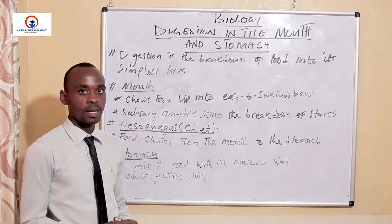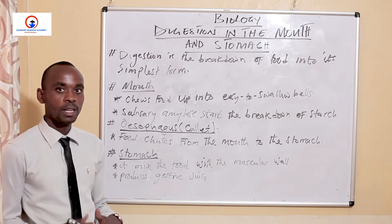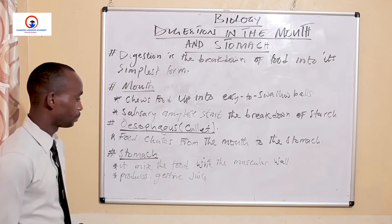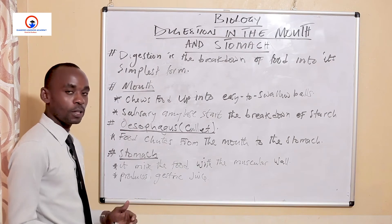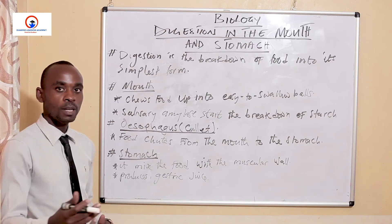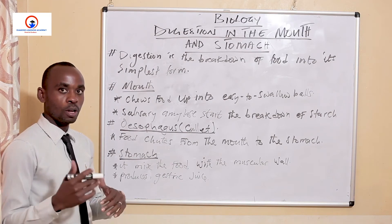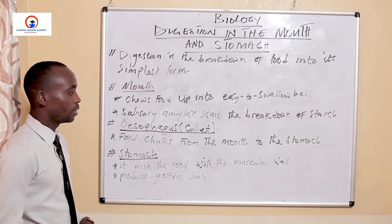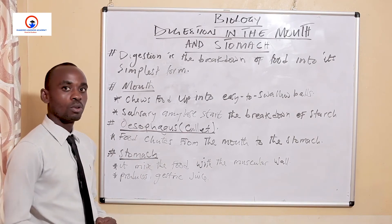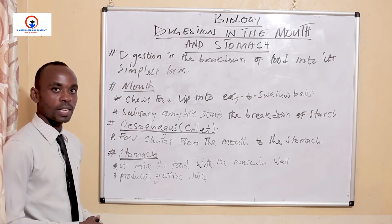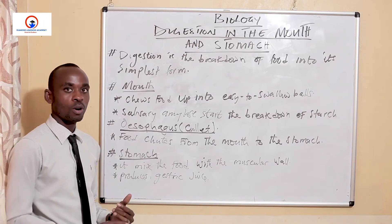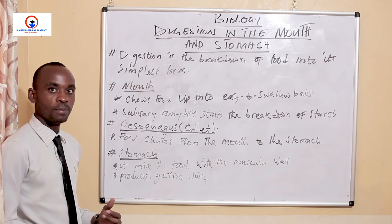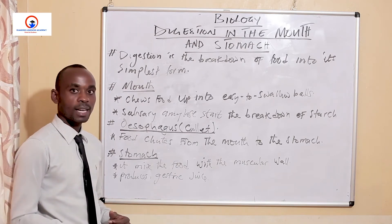As the food is received in the stomach, there are some important actions that take place to assist digestion. The stomach produces what we call gastric juice. Gastric juice is very important because it contains hydrochloric acid and also two enzymes known as pepsin and rennin.